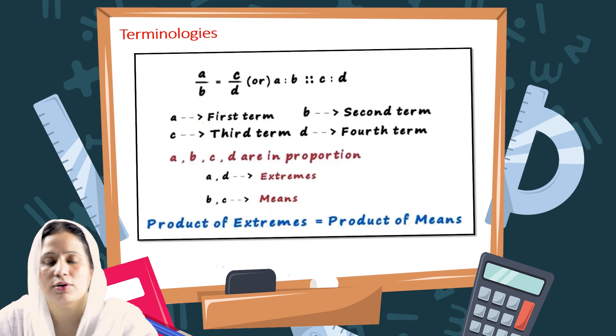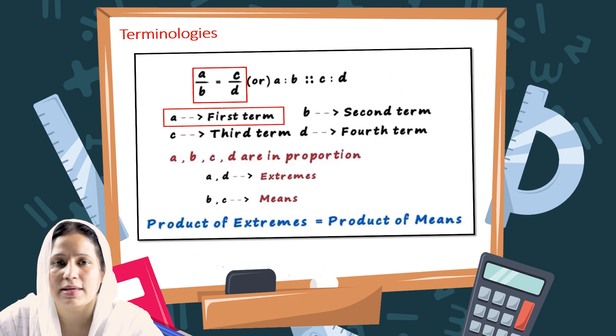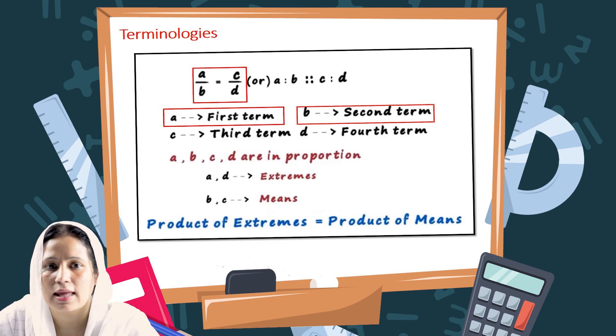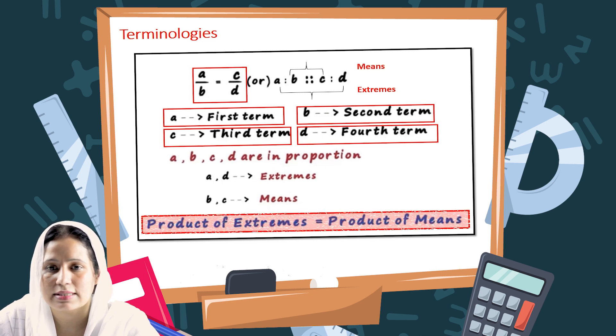There are a few terminologies about proportion. Let's suppose there are four random quantities a, b, c, and d. A over b is equal to c over d. You can see that a and d are the extreme values, whereas b and c are coming in the middle. When you observe this, you can see that the product of extreme values is equal to the product of their means.